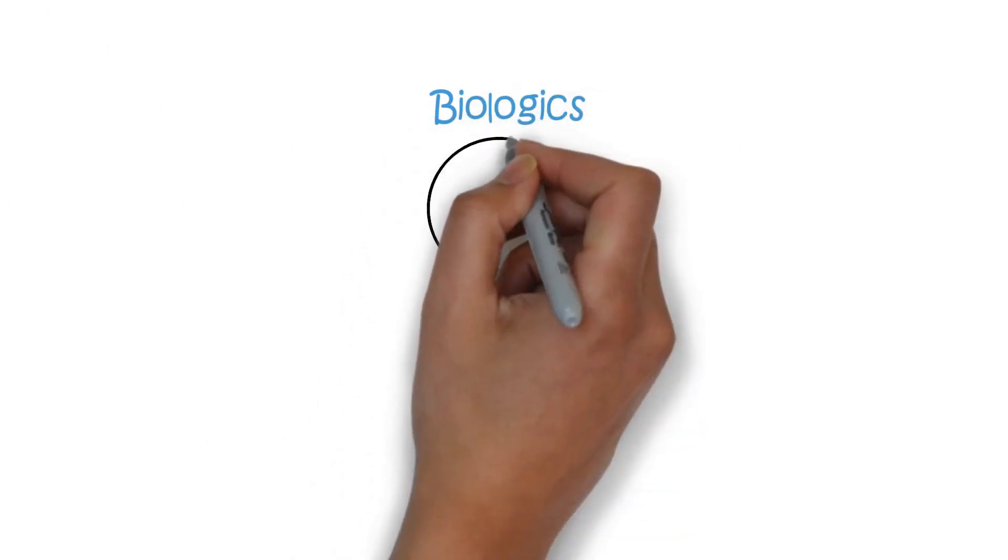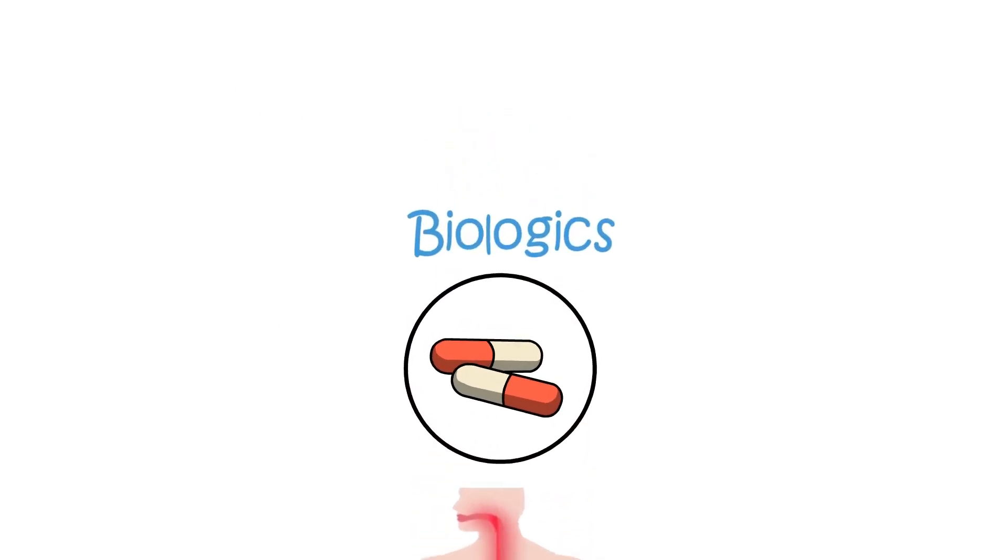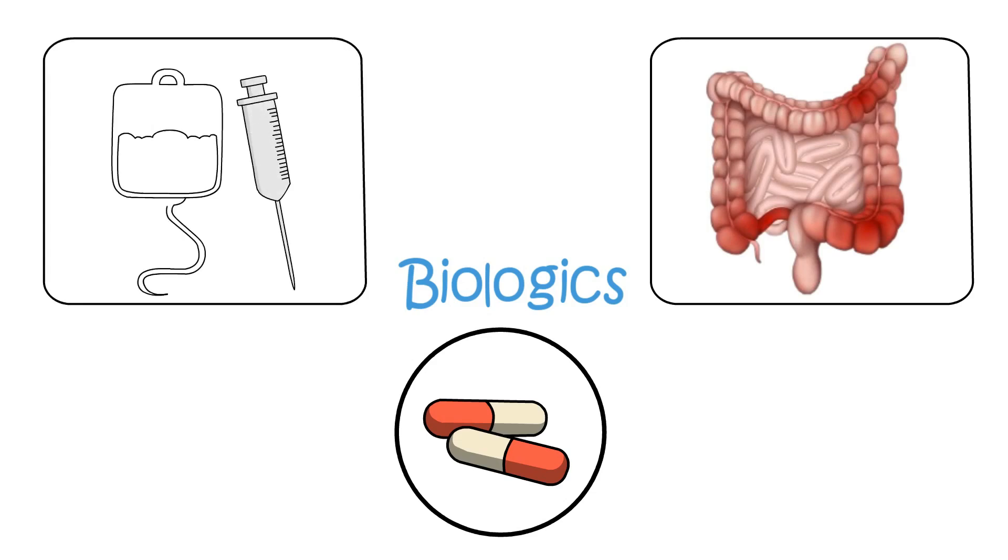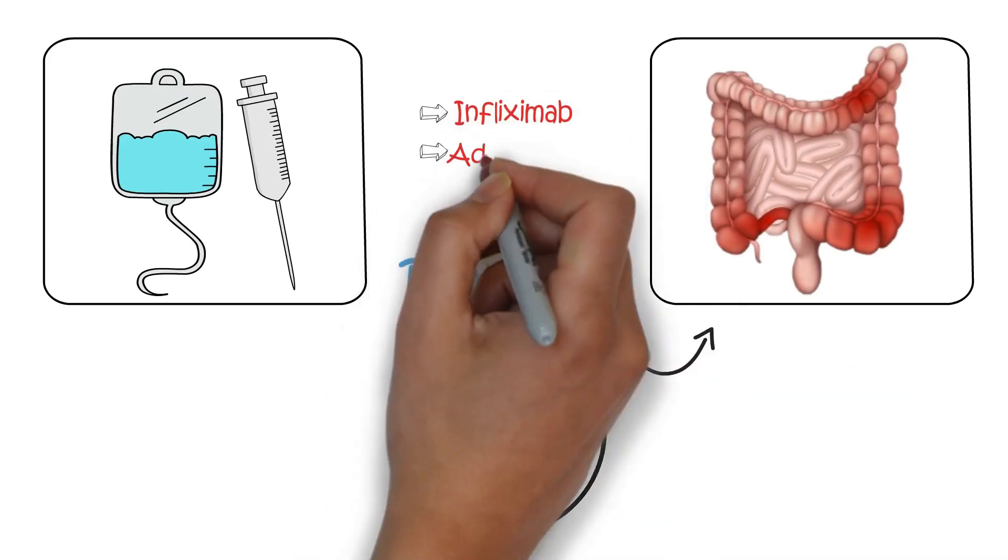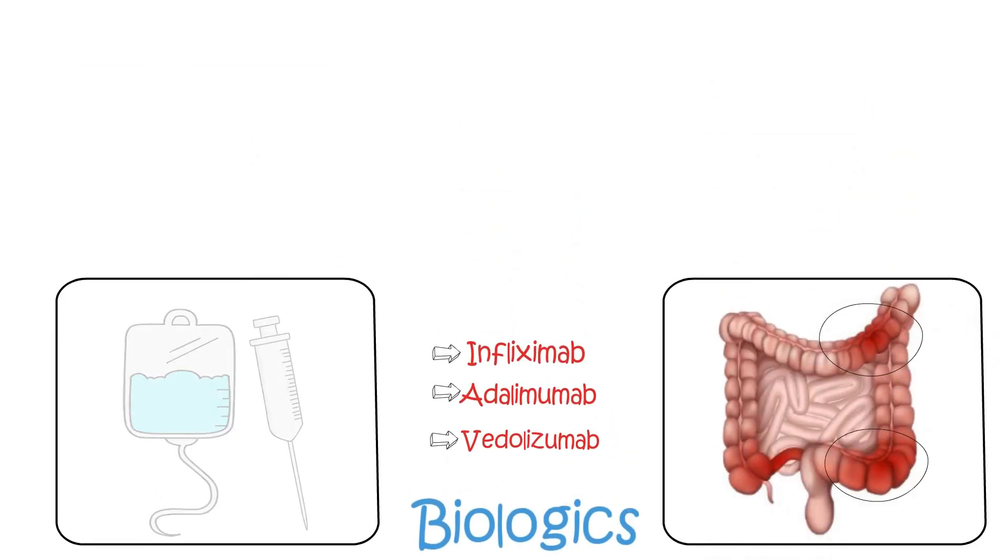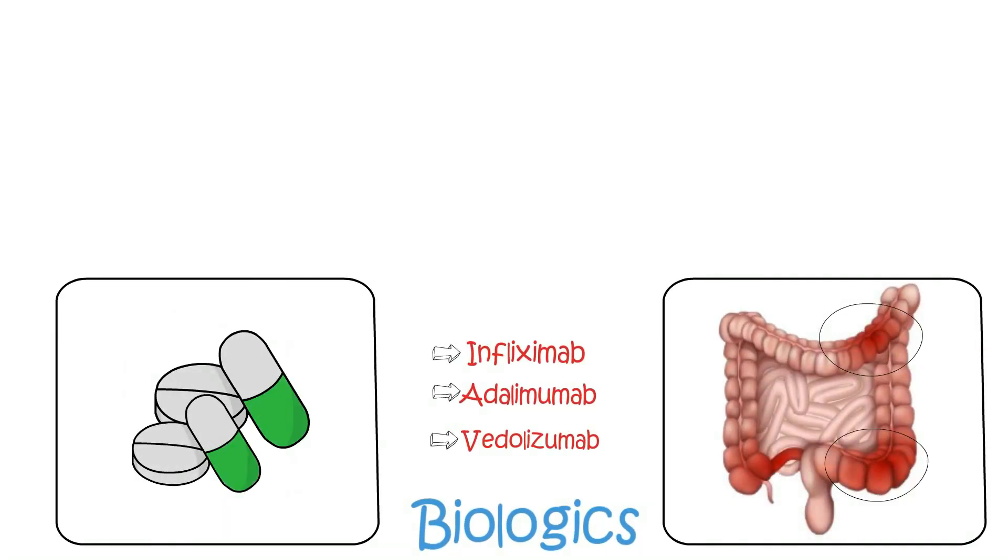Biologics are a newer class of medications that target specific components of the immune system that contribute to inflammation. They are typically used in more severe cases of IBD and can be given via injection or infusion. Some common biologics used to treat Crohn's include infliximab, adalimumab, and vedolizumab. If an infection is also suspected then antibiotics may also be indicated.